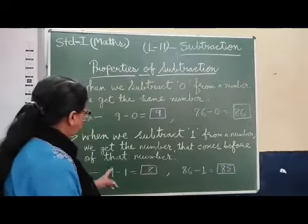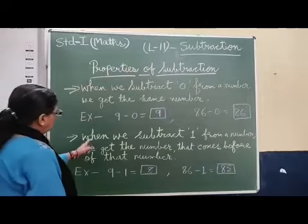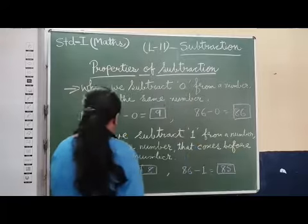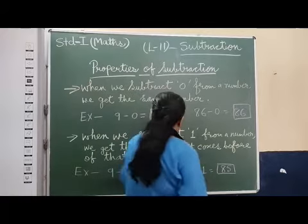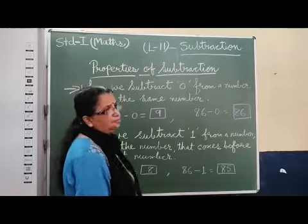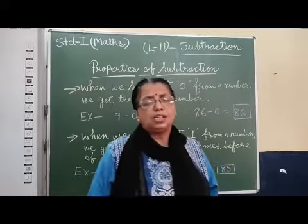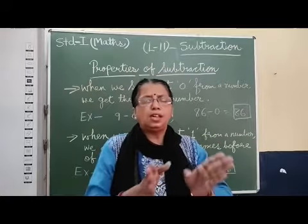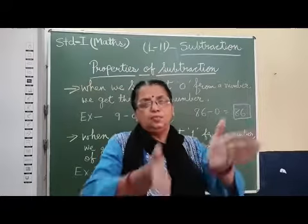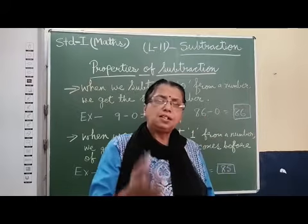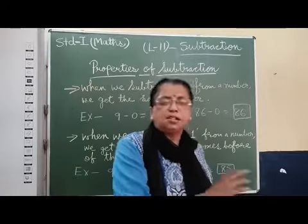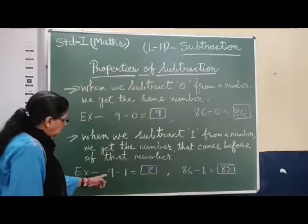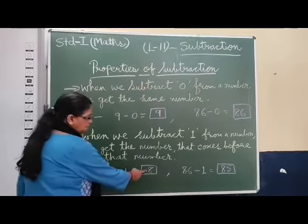This is one property. Second property: when we subtract one from a number, we get the number that comes before that number. That means if you subtract one from a number, the 'before number' will come. Simple way to remember this: the before number will come. Whatever may be the number, the number before it will come. I have taken the same example — you can see here: nine minus one.